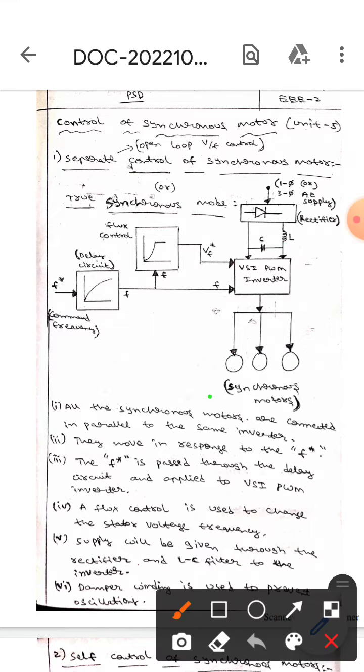These are all the synchronous motors. We can also call them synchronous machines. These are all connected in parallel to the same inverter, and they move in response to the F conjugate. This F conjugate is passed through the delay circuit.